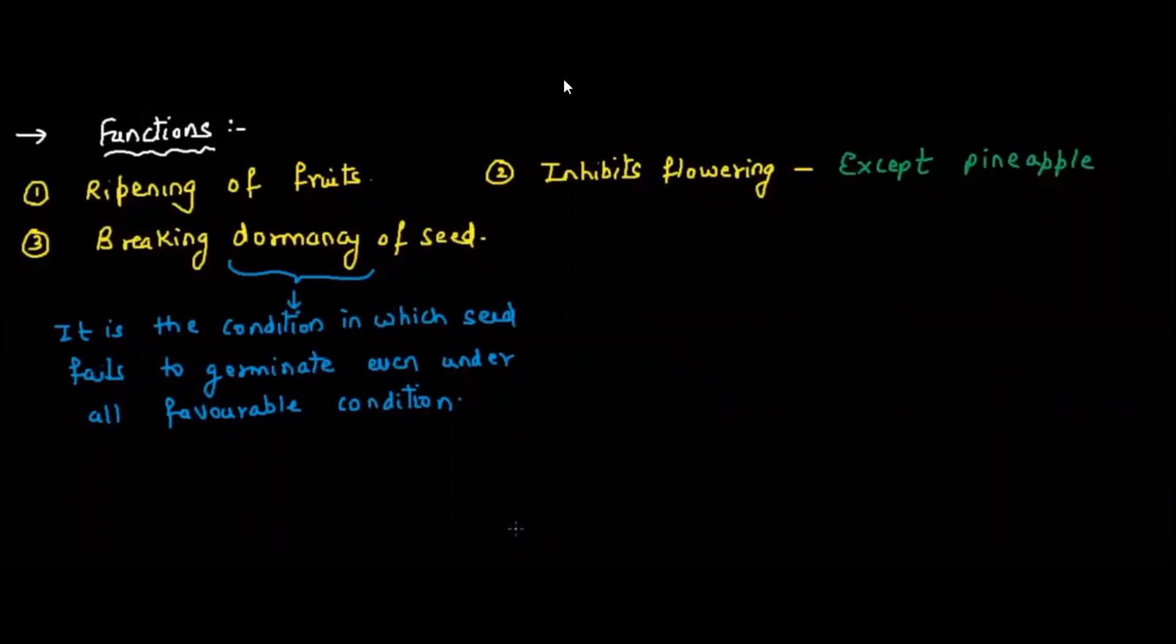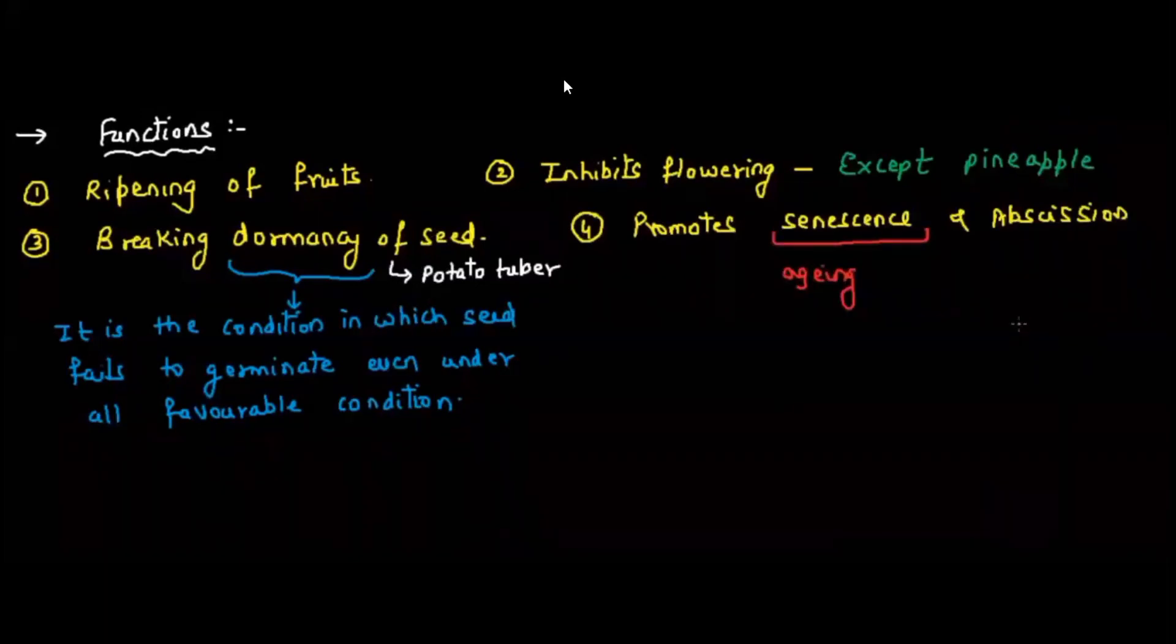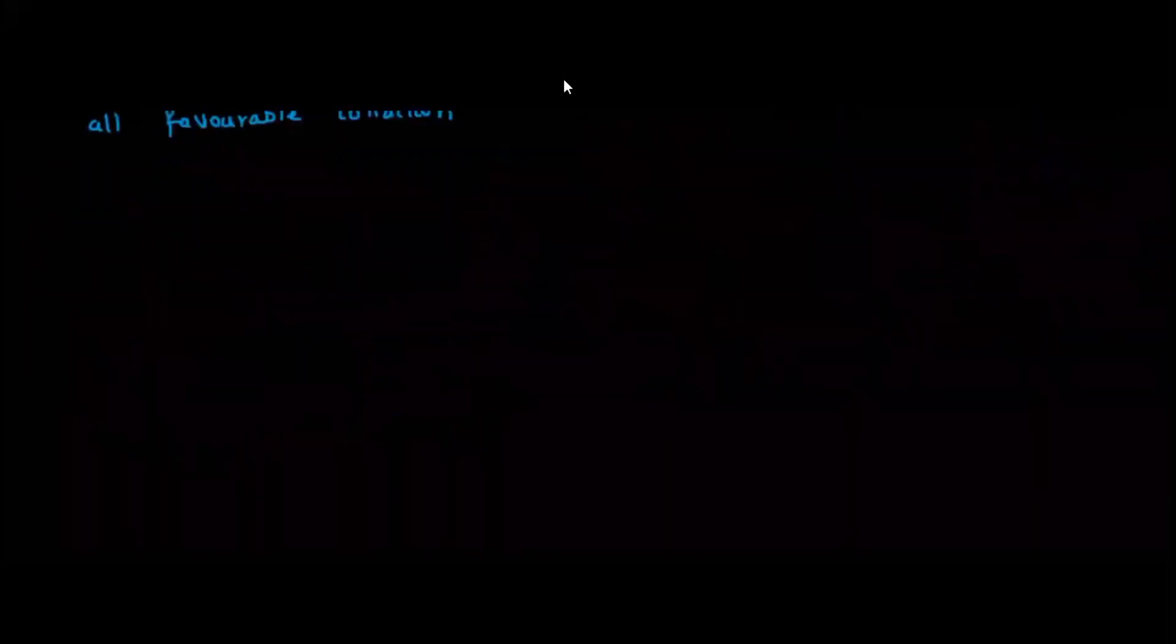The next function of ethylene is that it helps in promoting senescence and abscission. What is senescence? Aging. What is abscission? Breaking of fruit and leaves from the tree. So ethylene, if present in large amount on the tree, will promote senescence and abscission.